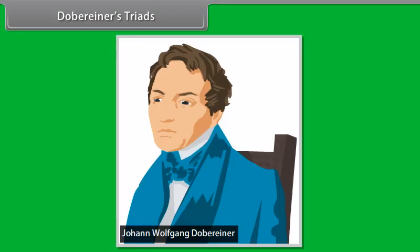Döbereiner's triads. In 1829, Döbereiner, a German scientist, made groups of three elements each based on their properties. He named them triads.